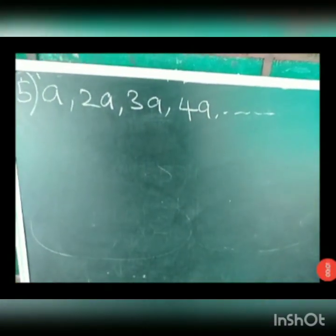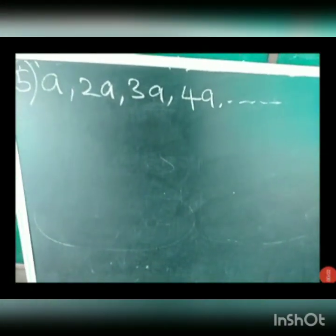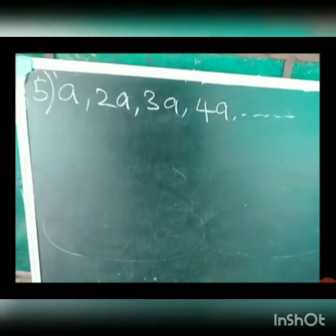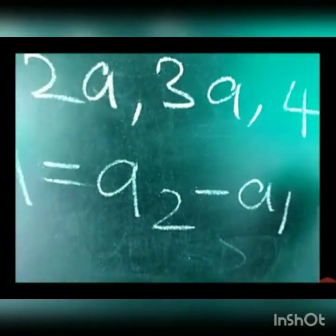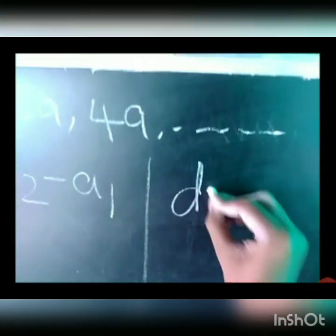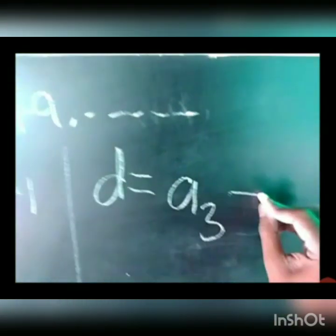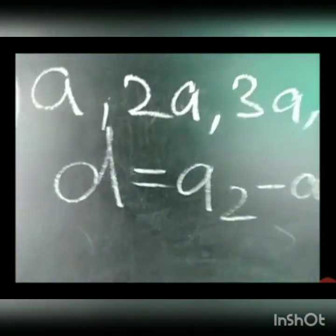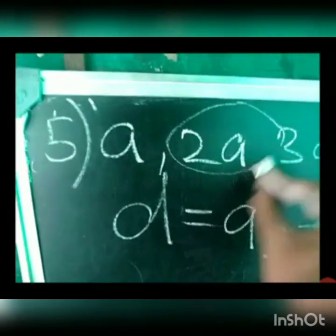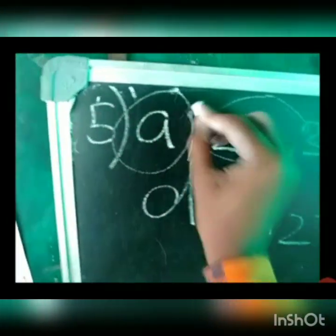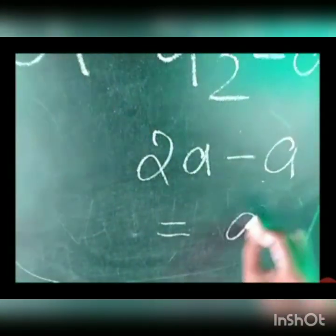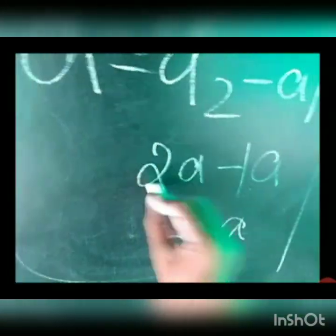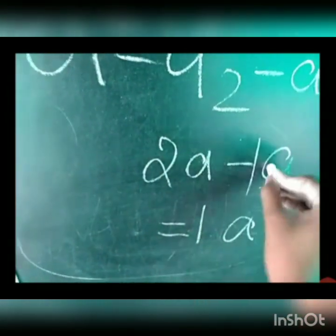We have a, 2a, 3a, 4a and so on. We have to check whether it forms an AP or not. If it forms an AP we need to find the common difference and the next three more terms. Write the formula: d equals a2 minus a1. Here a2 is 2a and a1 is a, so 2a minus a — the coefficient is 2 minus 1, which is 1, so d = a.